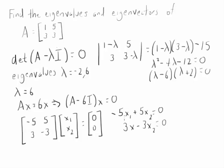Divide this by 3, divide that by negative 5, and you will get the same equation. Or another way of saying that: X1 equals X2. That's important.